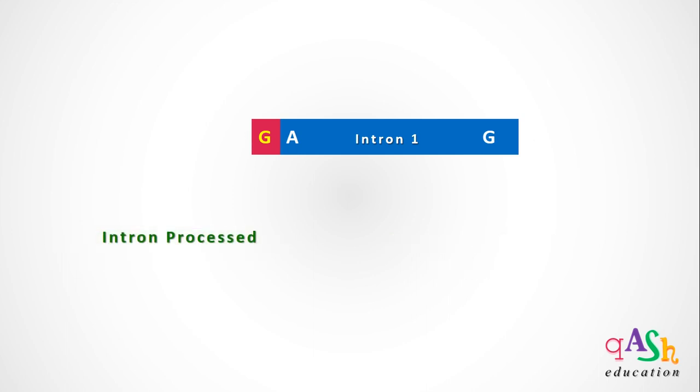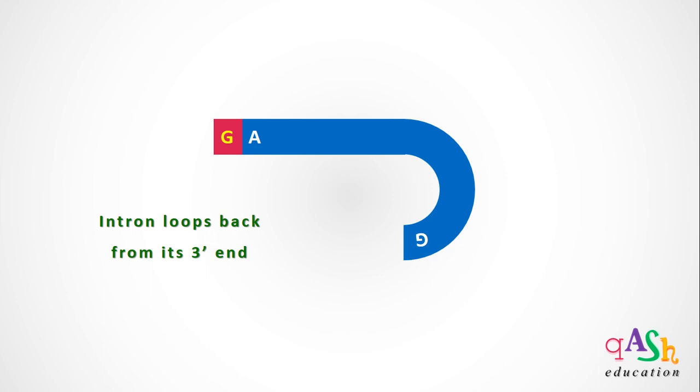The remaining intron is processed to loop backwards from its 3' end, forming a characteristic lariat structure.